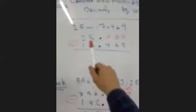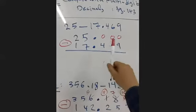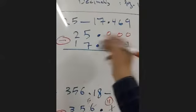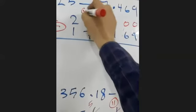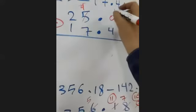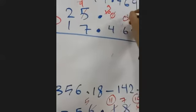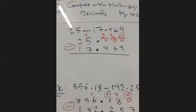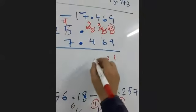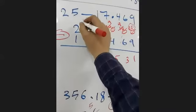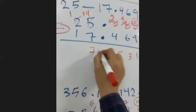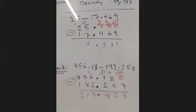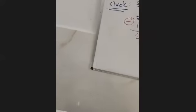Align the second number 1, 7, 4, 6, 9 below. We have three empty spaces — fill them with zeros. Now subtract normally: 0 minus 9, 0 minus 6, 0 minus 4 — can't do any of these, so we borrow through. Working through the borrowing: 10 minus 9 is 1, 9 minus 6 is 3, 9 minus 4 is 5. The decimal comes down. 4 minus 7 — borrow, 14 minus 7 is 7. The answer is 7.531.